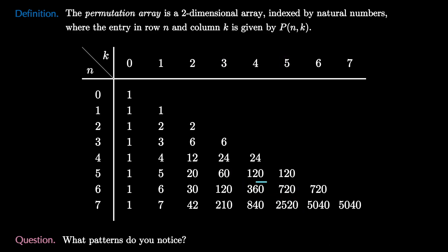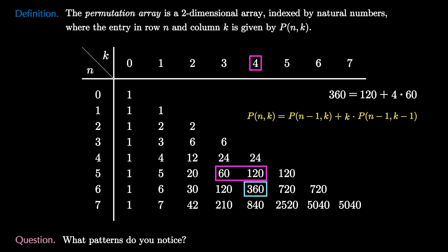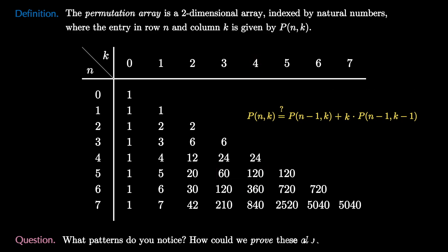Here's a more complicated question: can you find some relationship between an entry and the two entries above it, depending on which column the entry is in? Focus on the entry in row 6, column 4: 360. It turns out that 360 equals 120 plus 4 times 60. This suggests that maybe there's an identity that says P(n,k) equals P(n-1,k) plus k times P(n-1,k-1).